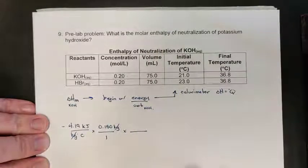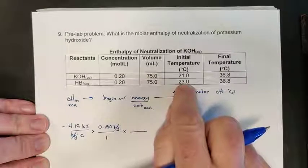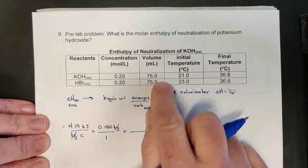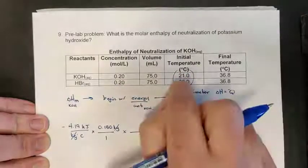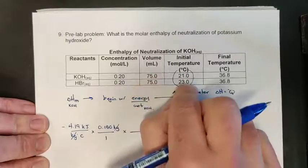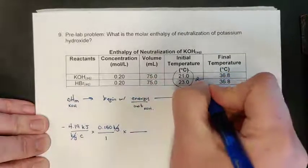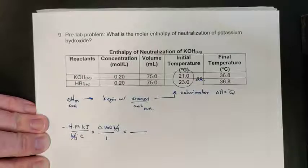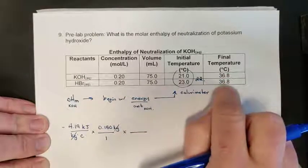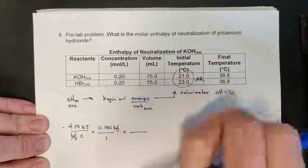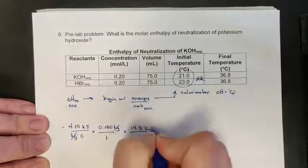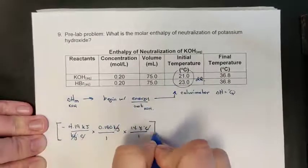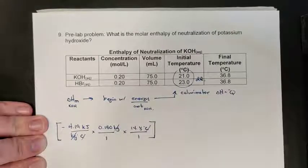For the temperature change: I had a cold solution at 21°C and a warmer solution at 23°C of equal volumes, so I take an average — 22°C as the initial temperature. They come to equilibrium at 36.8°C, so the temperature rises by 14.8°C. The square brackets highlight that these three fractions represent the energy released or absorbed by the calorimeter solution.